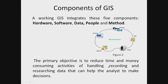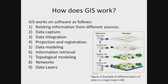The primary objective is to reduce time and money-consuming activities of handling, recording, and researching data that can help analysts make decisions. GIS software works as follows: first of all, it relates information from different sources such as ESRI Open Data Hub, Natural Earth Data, OpenStreetMap, and Survey of India.